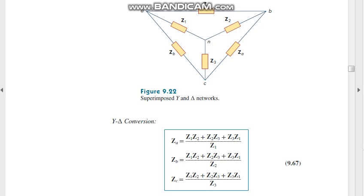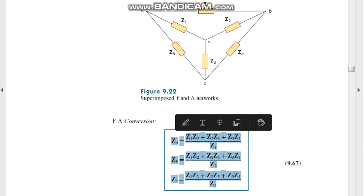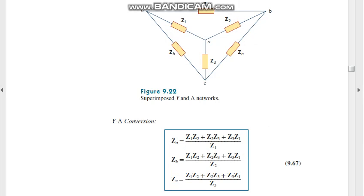If it is Zc, it will be Z3. If it is Z2, it will be Zb. But the factors are similar in the numerator, not the denominator, in the numerator upwards.